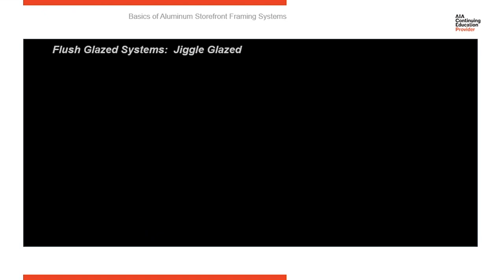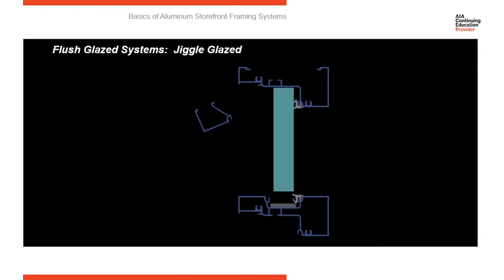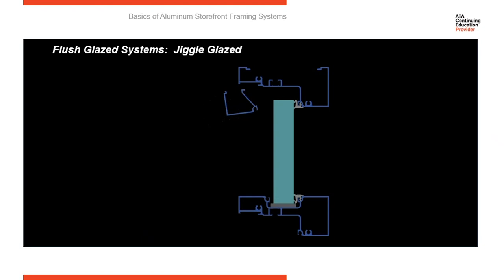Now let's look at the horizontal members. All horizontals are going to have a removable stop, either at the top or bottom of the light of glass. By removing that stop, we open up the area so glass can be set into it, drop down onto a setting block, and then the glass stop is brought into place and snapped in, holding the glass in the frame. This is how, with flush glazing, you can get glass into the frame where the light of glass is larger than the daylight opening.